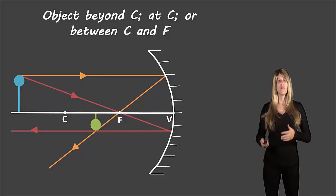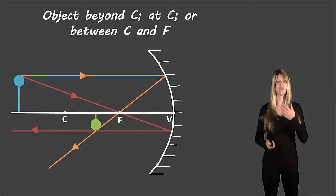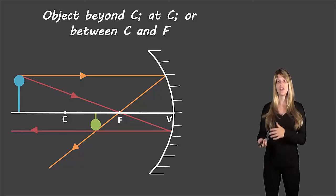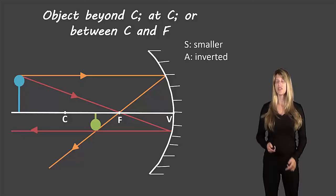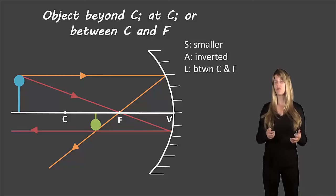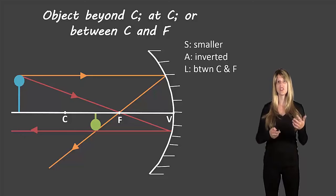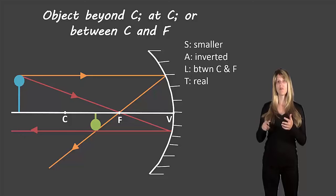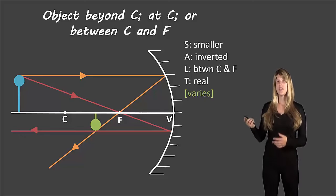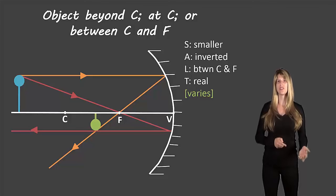We now have an image that matches our object. Describing this image: the size is smaller, the attitude is inverted because it's upside down from the original, and the location is between C and F — you don't need to be more specific than that. It's a real image because it's on the same side of the mirror as the original object. The mirror has dashed parts representing the other side; the image is not over there, so it's considered real. These descriptions vary slightly depending on which of the three locations the object is at.